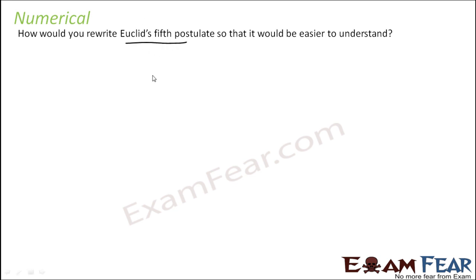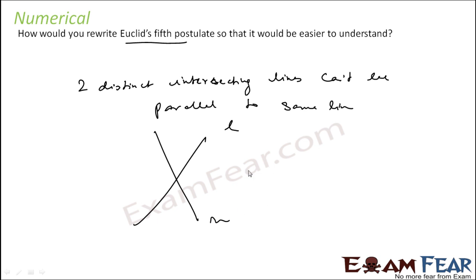How would you rewrite Euclid's 5th postulate so that it will be easier to understand? The easiest way I can say is: two distinct intersecting lines cannot be parallel to the same line. If there are two lines L and M and if L is parallel to L', then I can say that M will not be parallel to L' if they are intersecting.